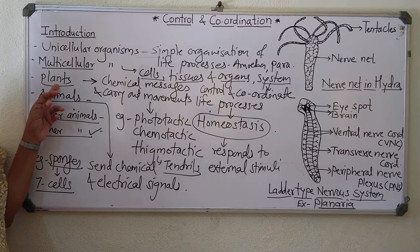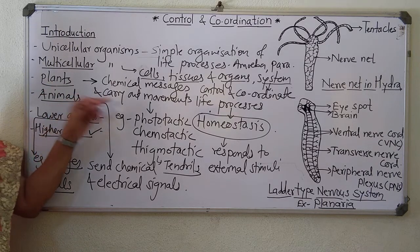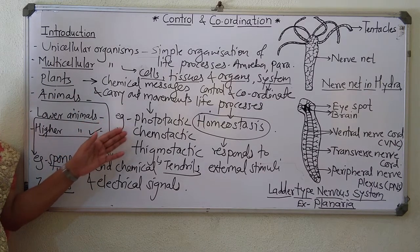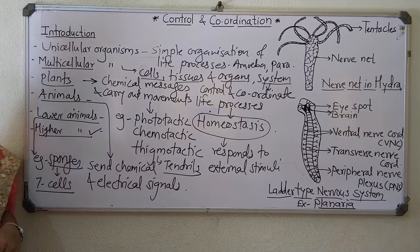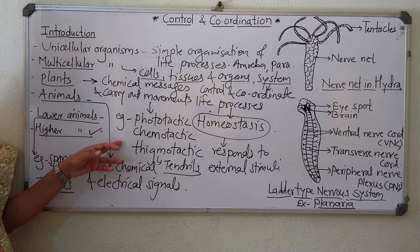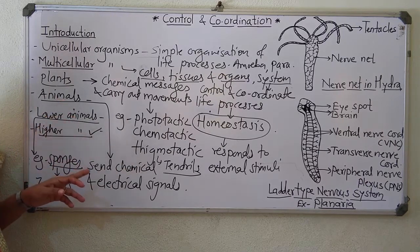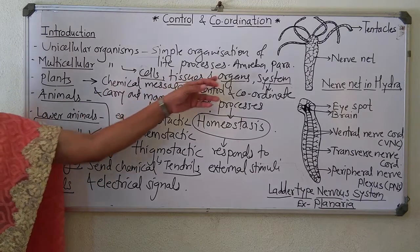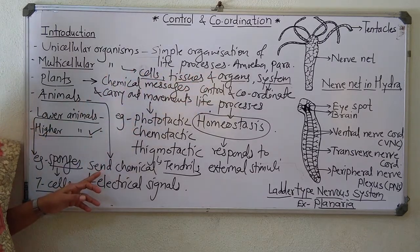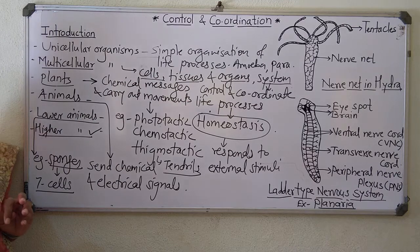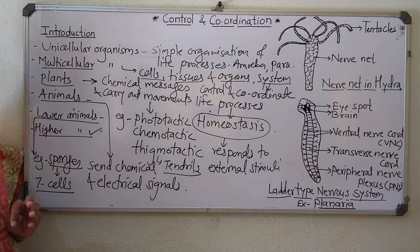In the case of plants, chemical messages carry out movements like phototactic, chemotactic, and thigmotactic. In animals, with such cellular organization, they send chemical and electrical signals. By chemical control and nervous control, they bring about homeostasis — that means control and coordination.